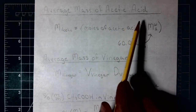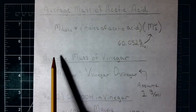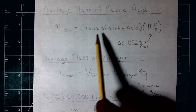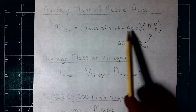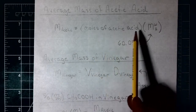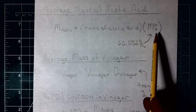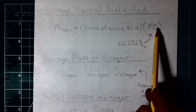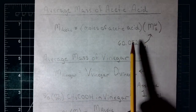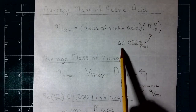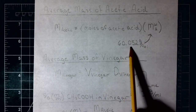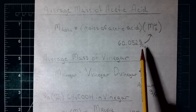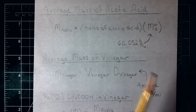Next they ask for the average mass of acetic acid. This is going to be the moles of acetic acid we calculated times its molecular weight. The molecular weight of acetic acid is 60.052 grams per mole.